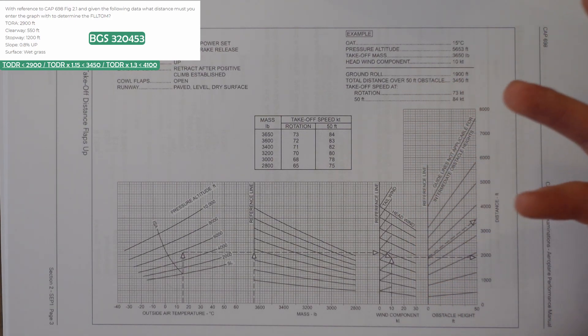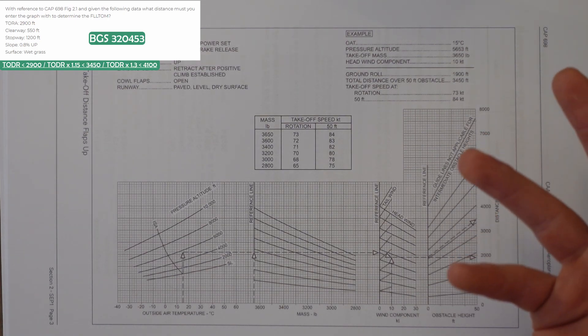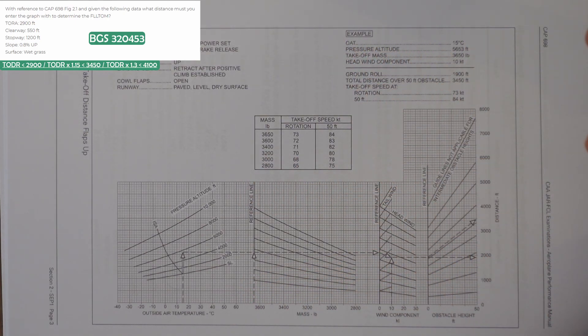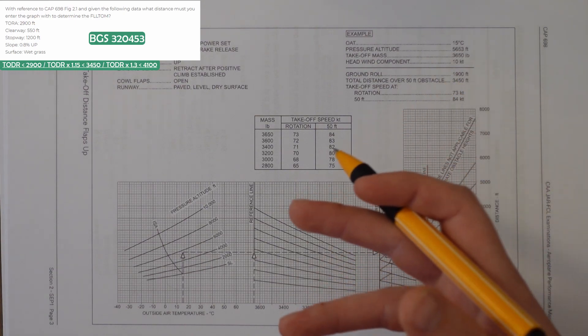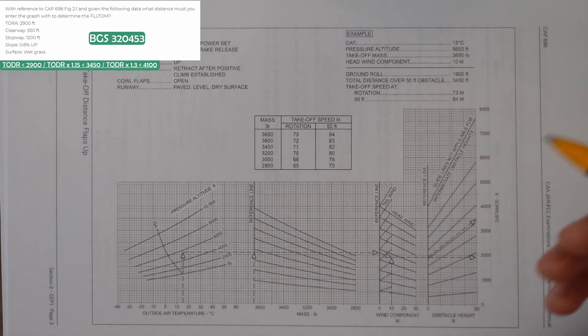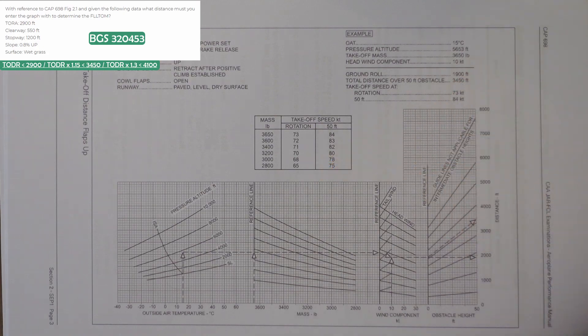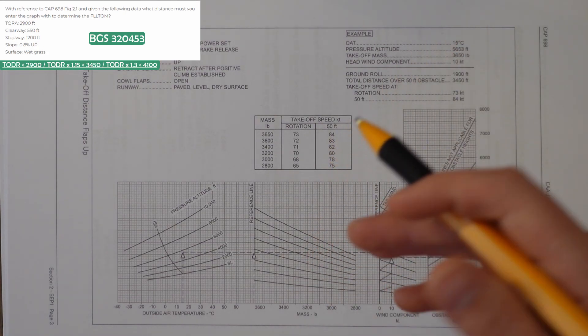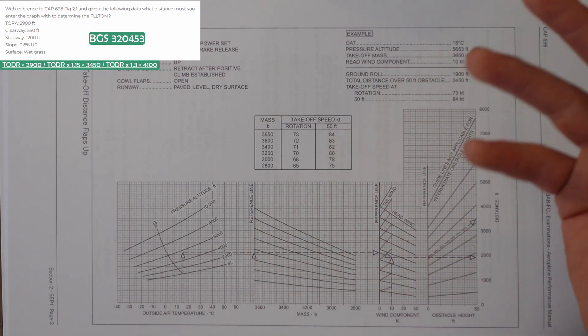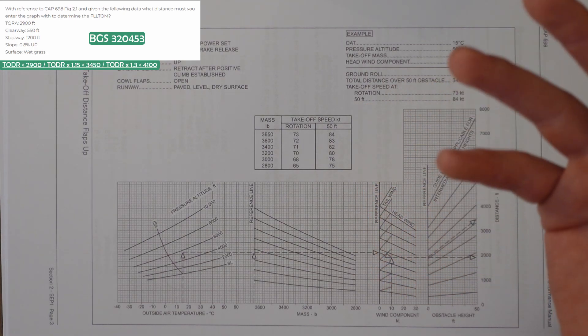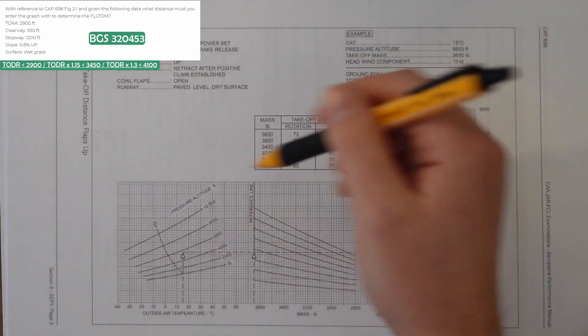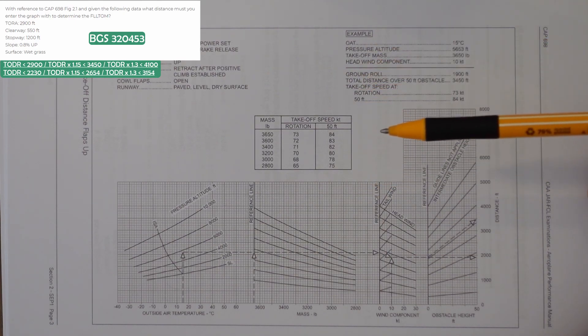So let's calculate these distances. Takeoff distance required has to be less than 2,900, or the takeoff distance required times 1.15 has to be less than 3,450, and the takeoff distance required times 1.3 has to be less than 4,100. We then need to apply all the relevant factors for wet grass and the slope. So all those distances get divided by 1.3 to give these answers.